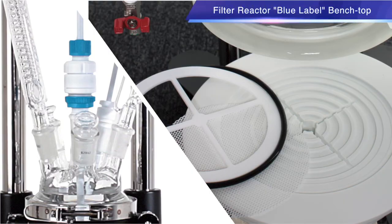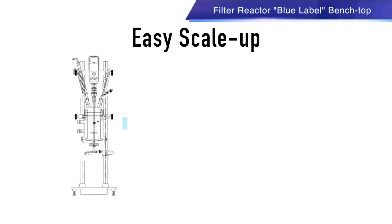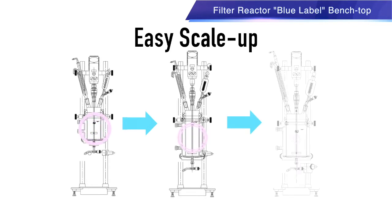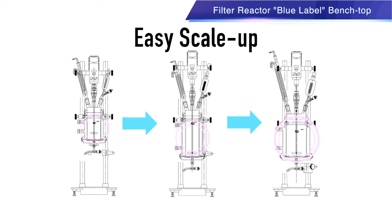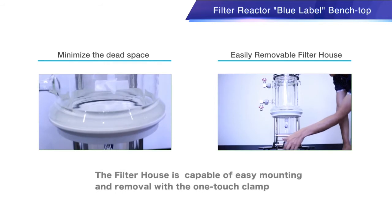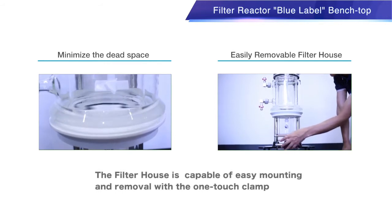This is the Blue Label Benchtop Filter Reactor Unit. It is a complete one-set system for laboratory use. Sizes range from 1 liter to 5 liter capacity. The chassis allows for interchangeable scale-up. Simply change the vessel as required.